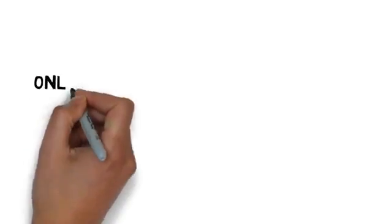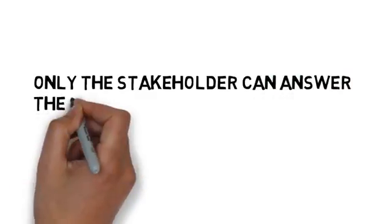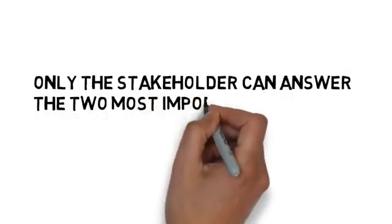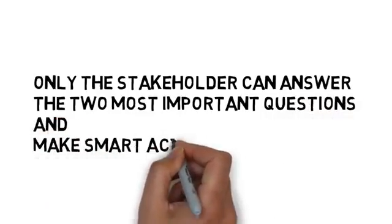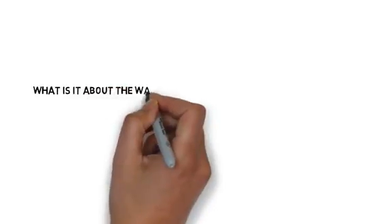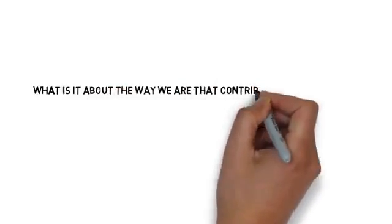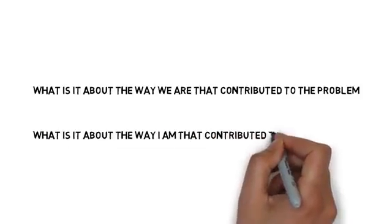After the stakeholders have viewed the evidence, they are the only ones allowed to determine the physical and human causes. They are the only ones allowed to write themselves up and determine smart action items. I need you to realize that the evidence gatherers never told them their conclusions. They just showed the evidence. Therefore, it is now time for reflection. The stakeholders must answer two important questions: What is it about the way we are that contributed to the event, and what is it about the way I am that contributed to the event?